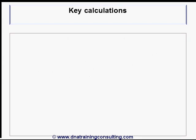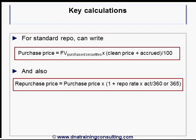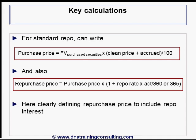It is helpful to lay out the key calculations of repo transactions via formulas. For a standard repo, the purchase price equals the face value of purchase securities times the sum of the clean price plus accrued interest, divided by 100. The repurchase price equals the purchase price times 1 plus the repo rate times actual over 360 or 365. Note that we are defining the repurchase price to include the repo interest, a source of ambiguity first mentioned at the beginning of this chapter.